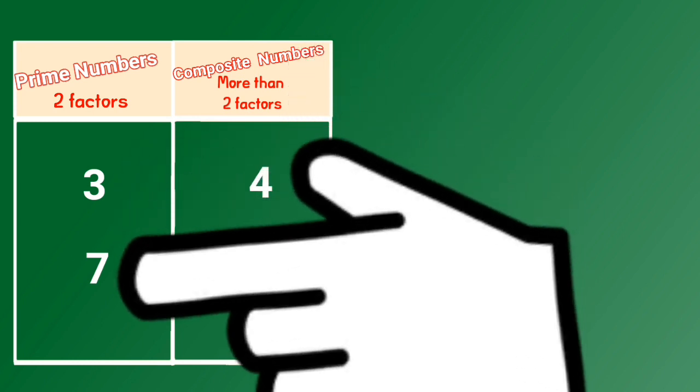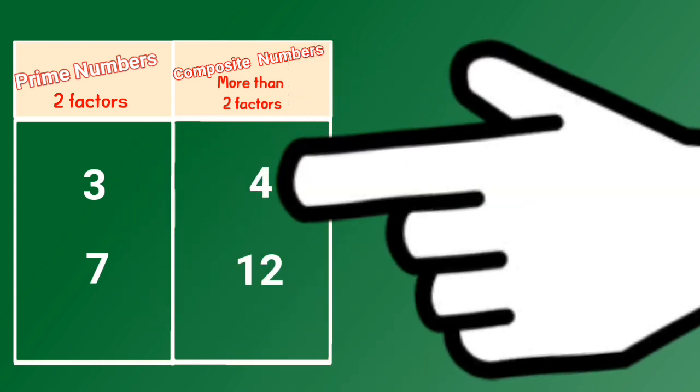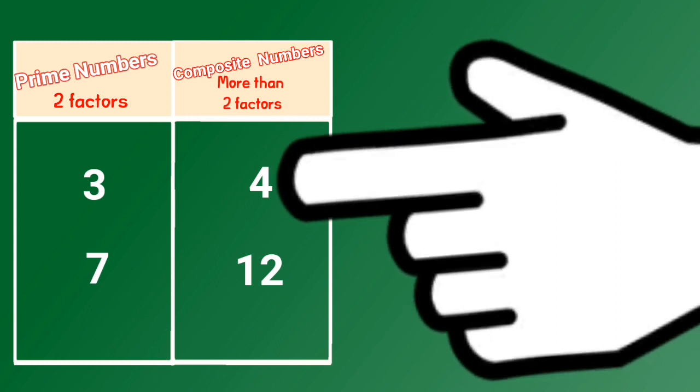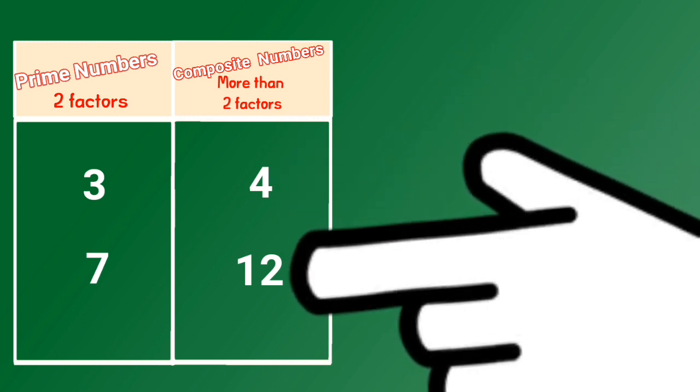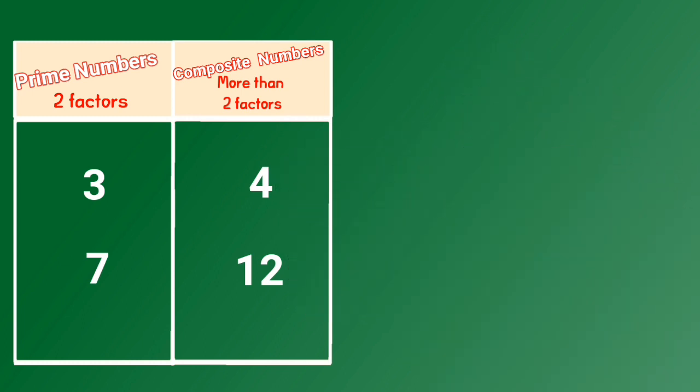3 and 7 are prime numbers. 4 and 12 are composite numbers.